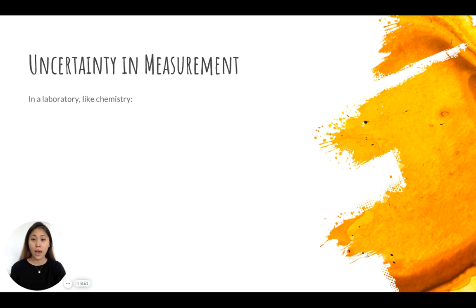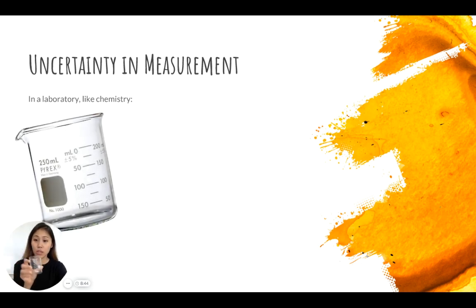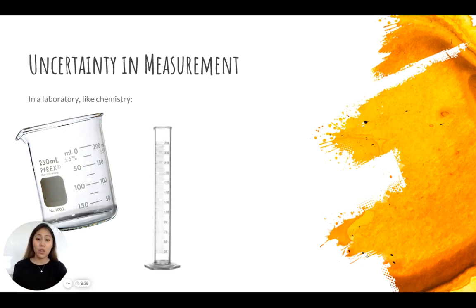In a chemistry lab, we could measure 25 milliliters of distilled water using a beaker. So like this one here, a 100 milliliters beaker on my end. A graduated cylinder on my end. This is a 50 milliliter graduated cylinder.